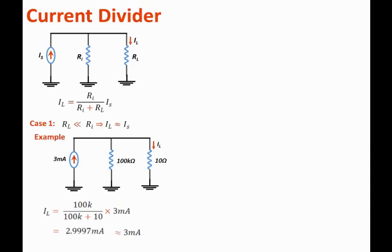So if the load resistance is very small, more current will flow through it. The reason is the voltage across the two resistors is the same — they are in parallel — so most of the current will flow through the smaller resistance. If you have a practical current source and you want to get most of the current to the load, make sure the load resistance is much much smaller than the source resistance. In fact, if the load resistance is 0, which means it's a short circuit, then all of the source current will flow through the short circuit.